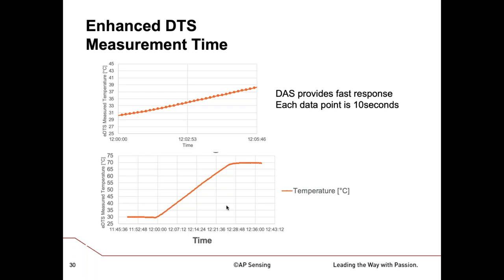Although the DTS is producing a measurement every 30 minutes at these long ranges, this is actually showing the DAS output every 10 seconds. As the temperature ramps up from 30 to 70 degrees, you can see a really nice ramp, and the top plot is a zoom-in of that ramp showing what the DAS is providing every 10 seconds. So not only do you get a better temperature resolution on your trace, you also have the ability to check temperature every 10 seconds — a much better temperature resolution and a much shorter effective measurement time.